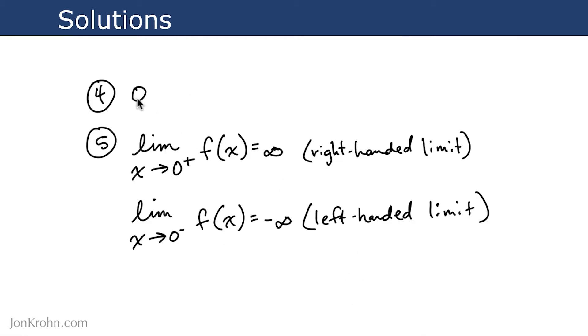The solution to exercise four is zero. And the solution to exercise five was a little bit of a curveball. So there are two limits depending on whether you approach zero from the right or from the left.